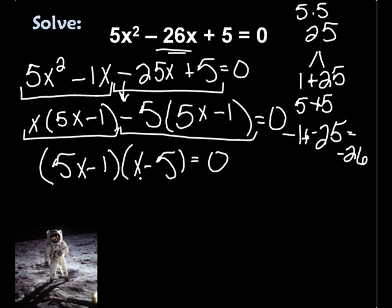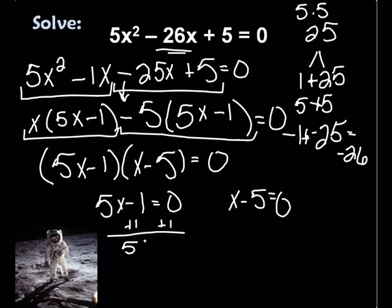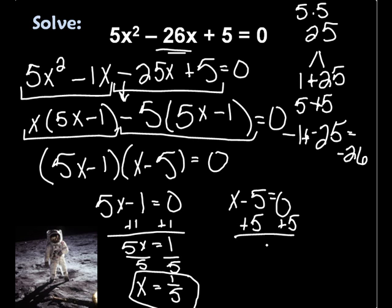Now I take each part and make it equal to 0, so 5x - 1 = 0 and x - 5 = 0. I'm going to add 1 to both sides—x equals 1/5, that's my first answer. And now I'm going to add 5 to both sides of this one to get x by itself, so x = 5, and that's my second answer.